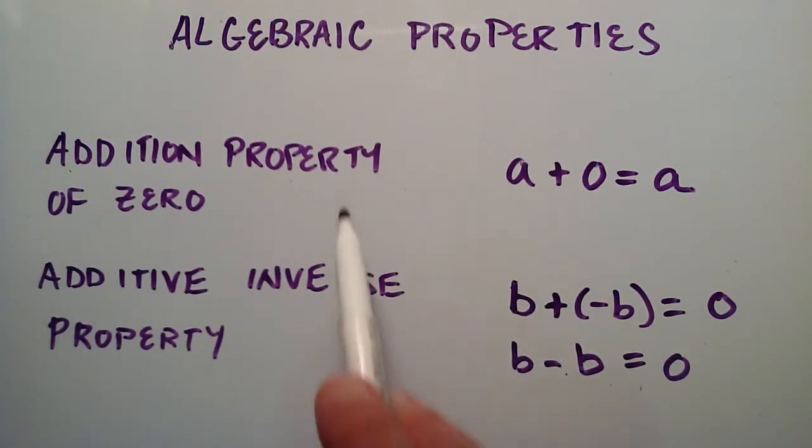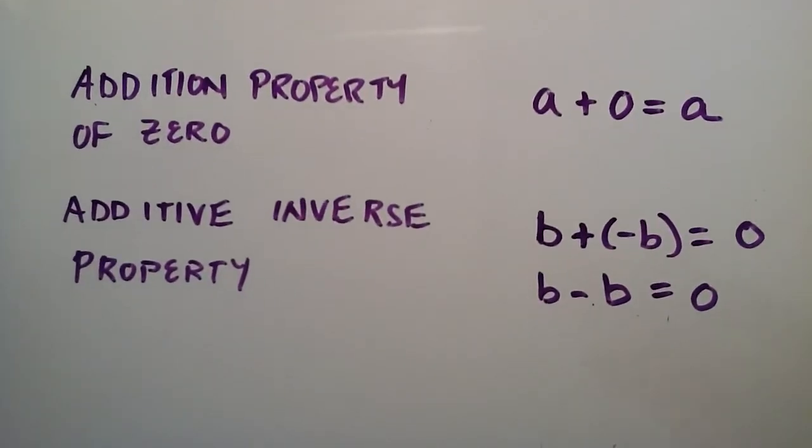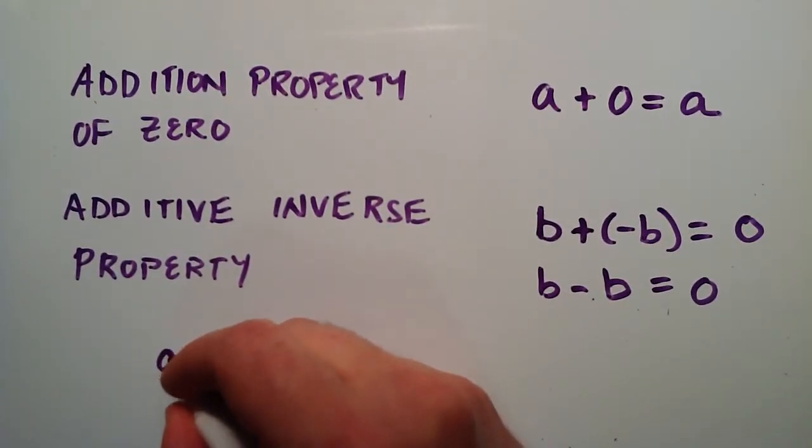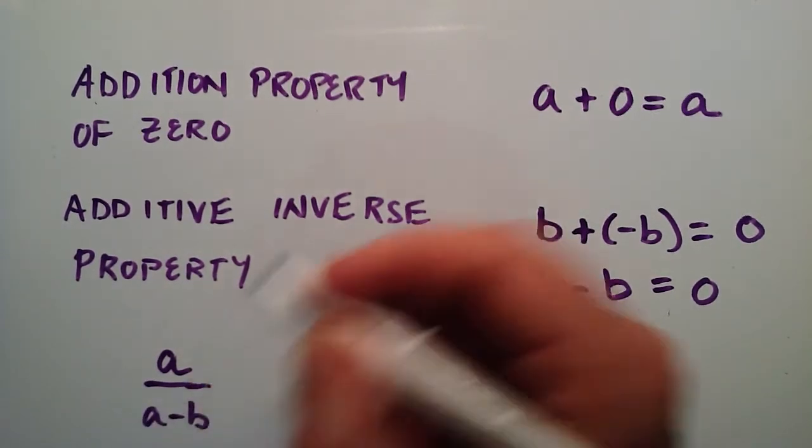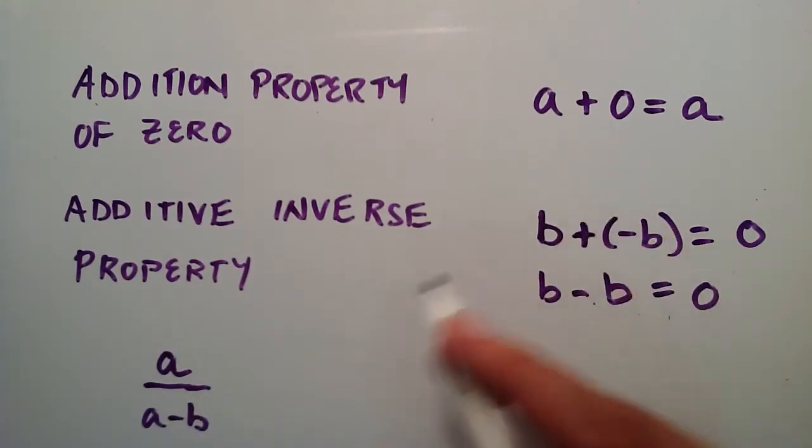So I'm going to use these two properties together to show you how we can take an expression and write it in a different form. So let's say that we have something that looks like this. We have a, and that's divided by a minus b. And we just want to write this in a different form. Well we can do that by using these two properties right here.